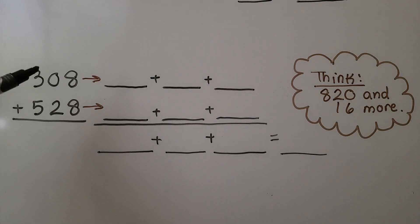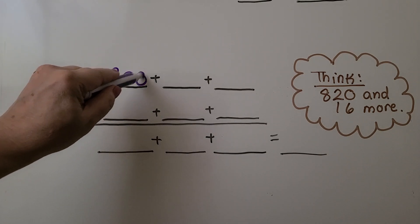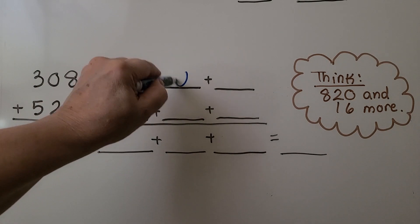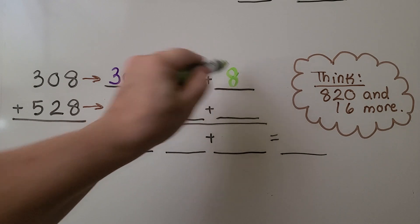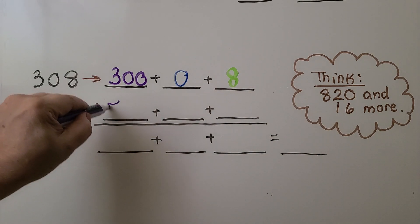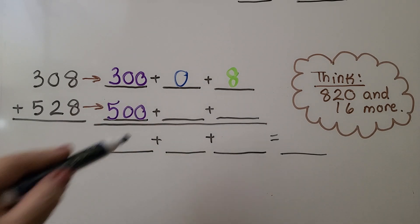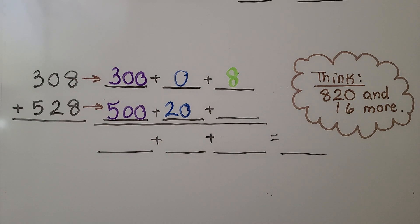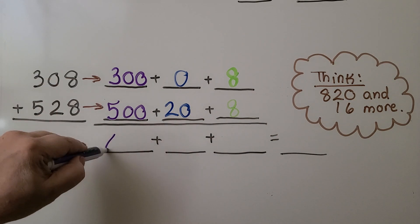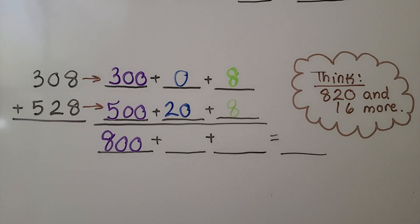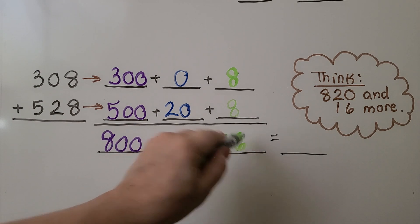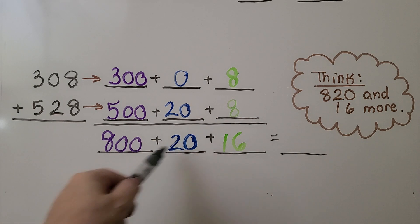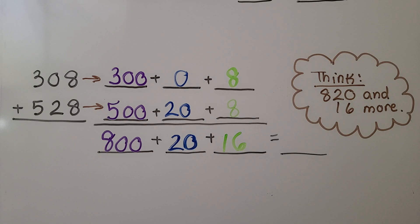Let's try another one. We have 308 plus 528. 308 is 300 plus 0 tens plus 8 ones. 528 is 500 plus 20 plus 8 ones. We add the hundreds: 300 plus 500 is 800. For our tens, we have 0 and 20, so that's just 20. And we have 8 plus 8 which is 16. We think 820 and 16 more. That would be 836.